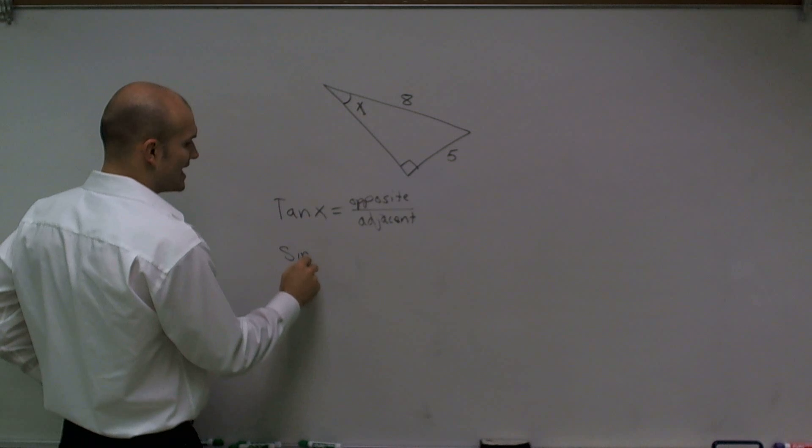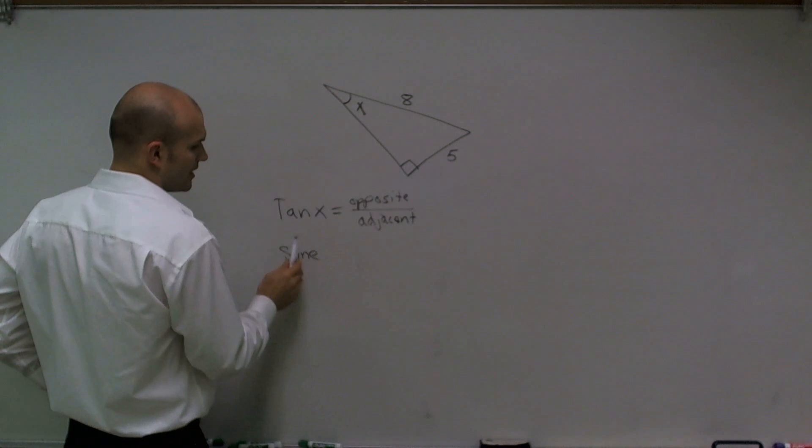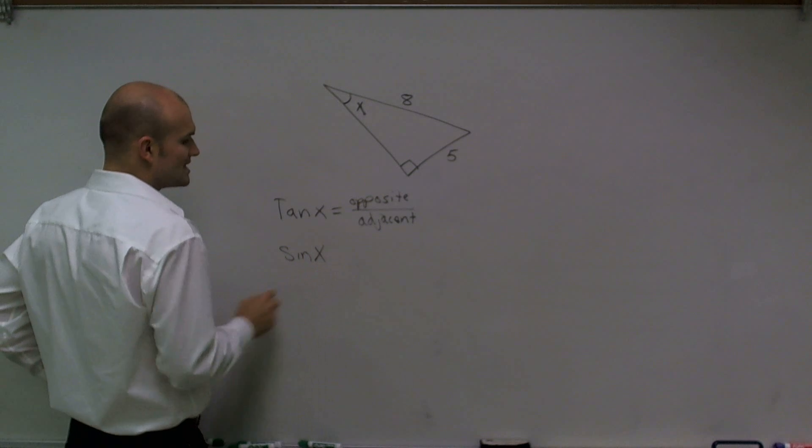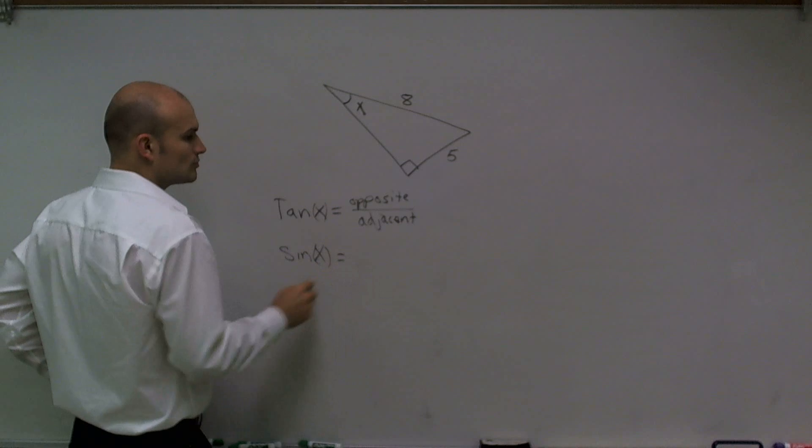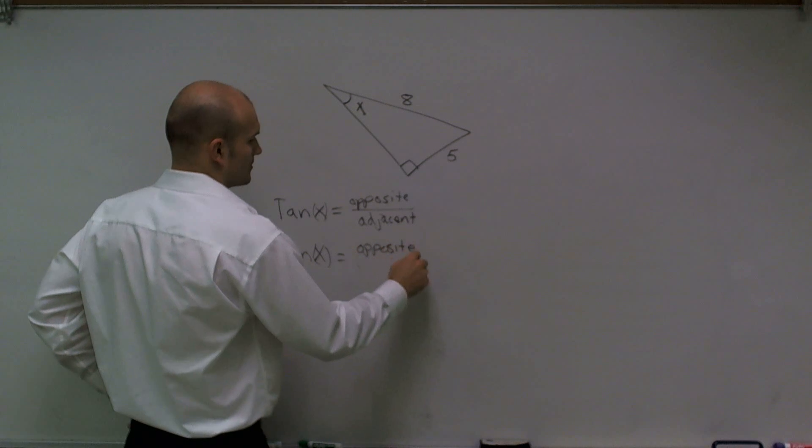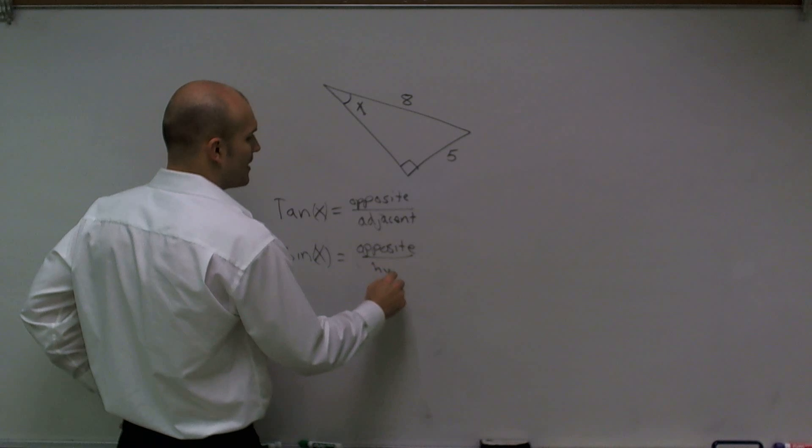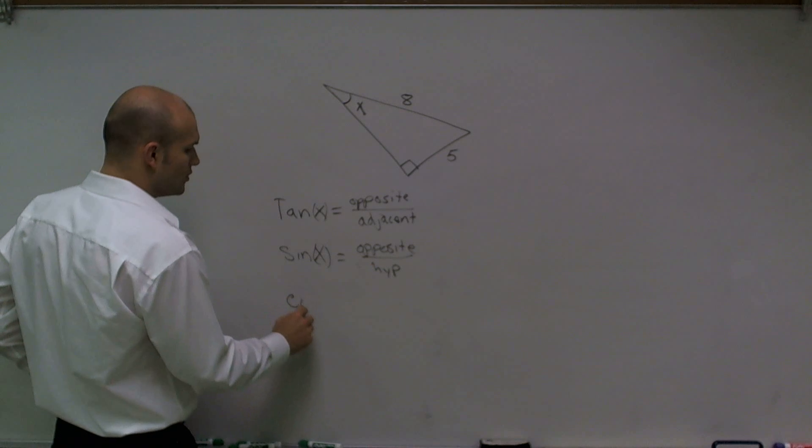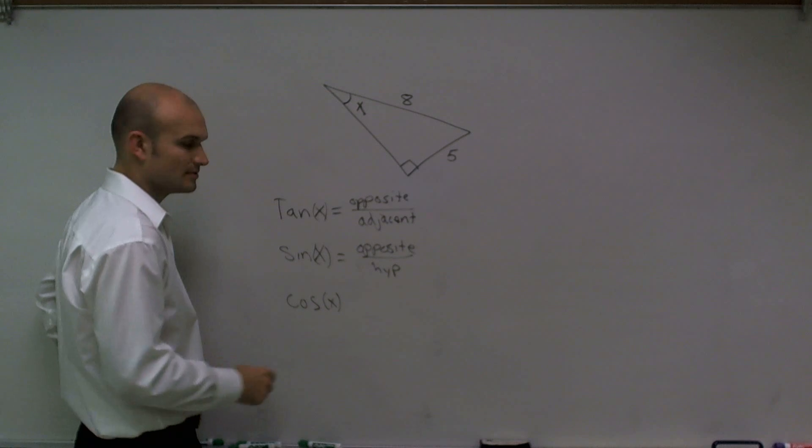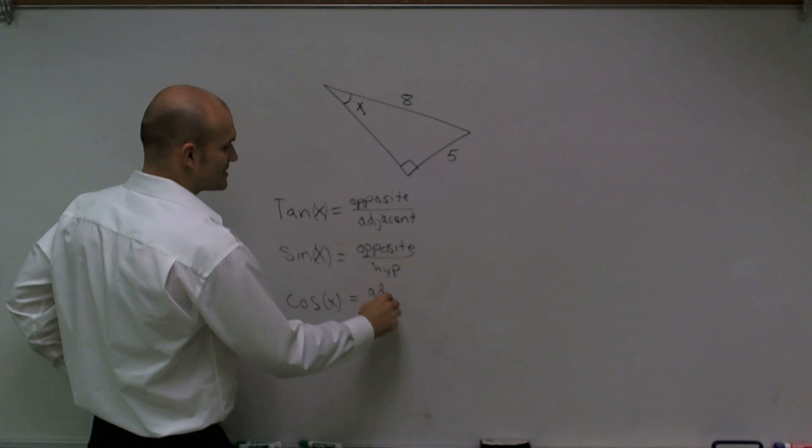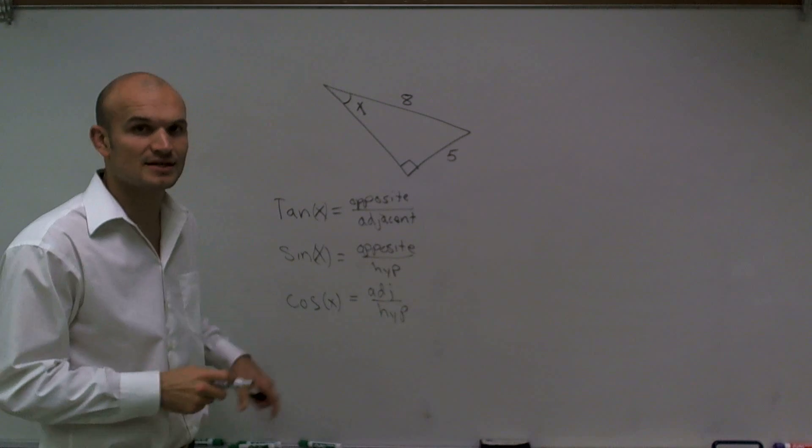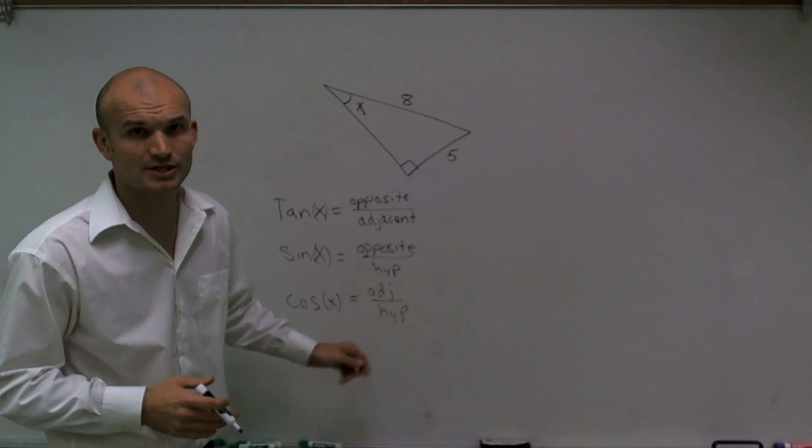Now that's one ratio or one trigonometric ratio. The next one is your sine function, and we usually abbreviate sine as sin. So sine of x is equal to the ratio of the opposite side length over your hypotenuse. And the cosine of x is equal to your adjacent over your hypotenuse. I just started abbreviating these just so you guys get used to this.